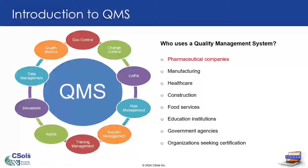The first system we will talk about is quality management system, or QMS. A QMS provides the framework for managing and continually improving quality in all aspects of the organization. This can include design, development, production, delivery, and also customer service. So what exactly is a QMS? Let's go over some of the basic functional modules.